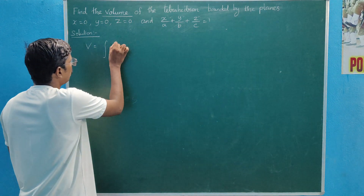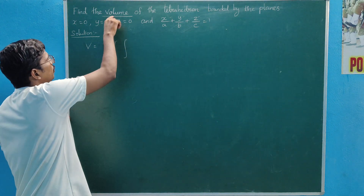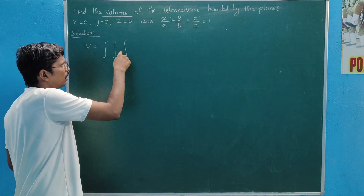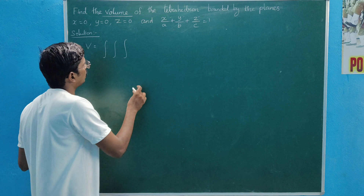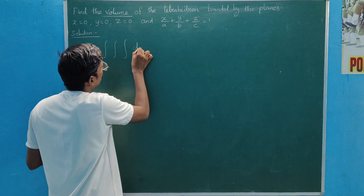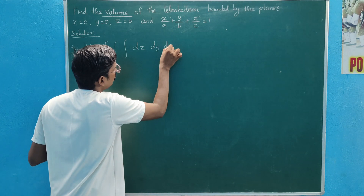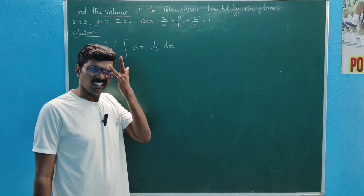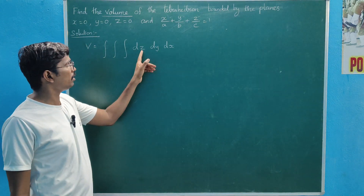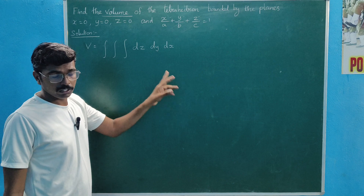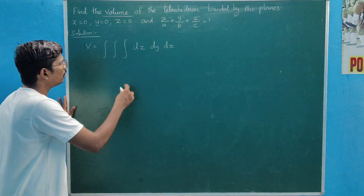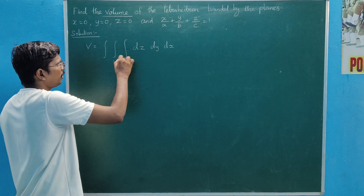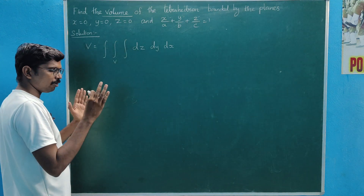To find the volume V using the triple integral with three variables x, y, z, the integral is dz dy dx.